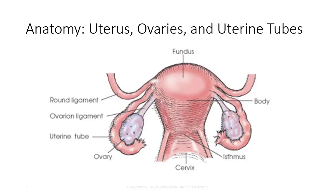The uterus is a pear-shaped muscular organ situated in the central part of the pelvic cavity, posterior to the urinary bladder, and anterior to the rectal ampulla. The nulliparous uterus extends approximately 3 inches or 7.6 centimeters in length. The uterus consists of four parts: the fundus, the body, the isthmus, and the cervix.